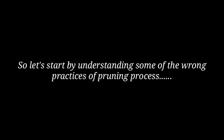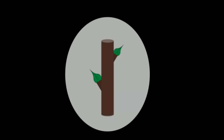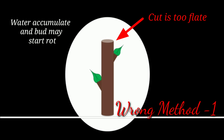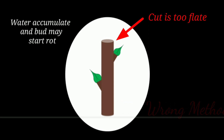Let's start with some of the wrong practices of the pruning process and cover why we should avoid them to keep our plants and trees safe. Please see this first picture of the wrong pruning process. In this picture you can see that the pruning cut is too flat, and if we prune like this, then at the time of watering this cut will hold water on the flat surface and our branch bud will start to rot. So we should always avoid this wrong practice.